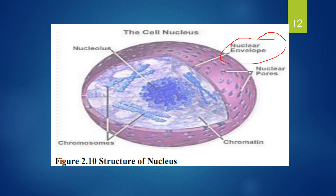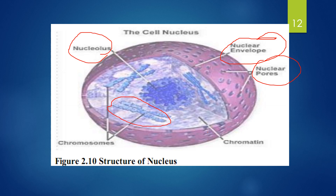This is called the nuclear envelope. These are called nuclear pores. The nuclear envelope is covered by the envelopes, and at the center of the nucleus there is a nucleolus, which is used for the production of ribonucleic acids. The structure of chromosomes — chromozomes carry genetic material — is also a component within the nucleus.